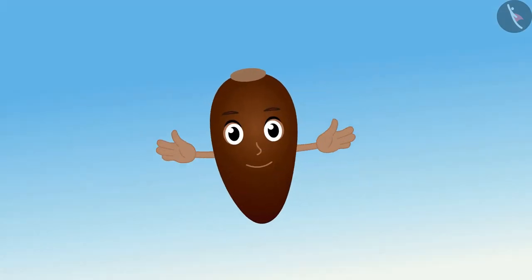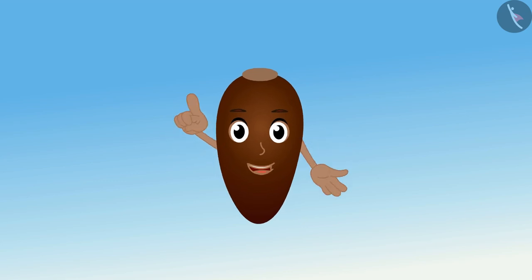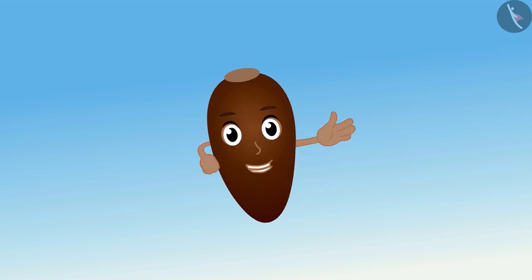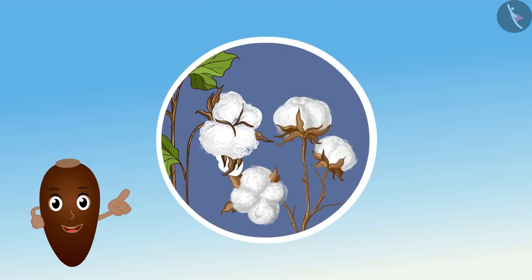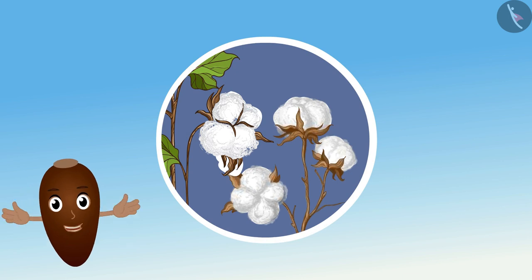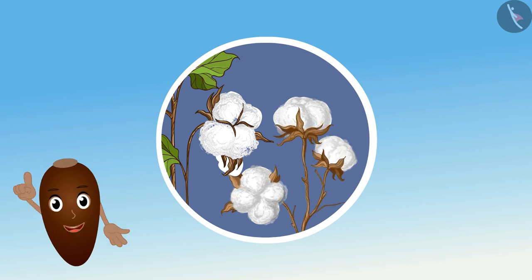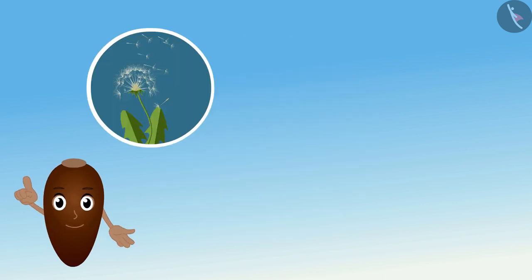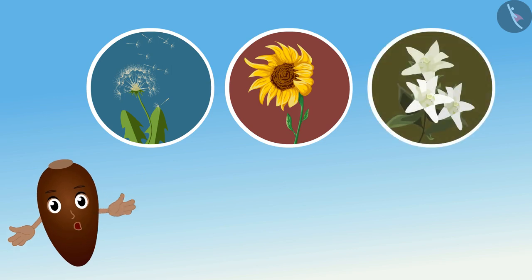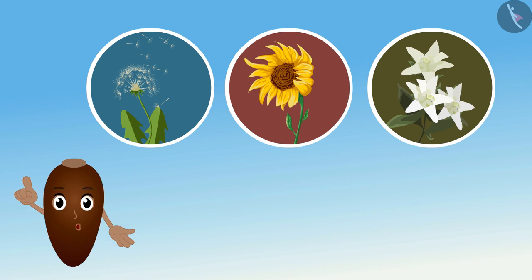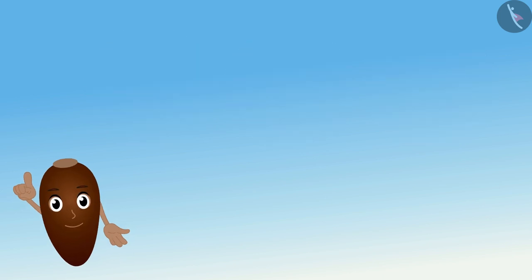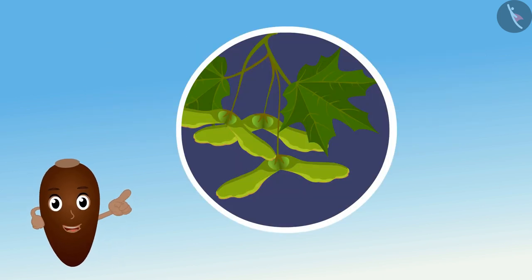These seeds are dispersed by various means. Wind is one such means for seed dispersal. Plants which have lightweight seeds, like cotton, scatter their seeds here and there in the wind. Other seeds dispersed by wind include Dandelion, Sunflower and Ark. Some seeds are winged too, like maple seeds. Because of being winged, these seeds fly from one place to another in the wind.